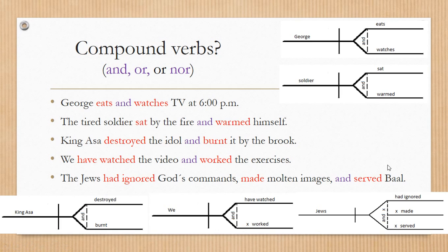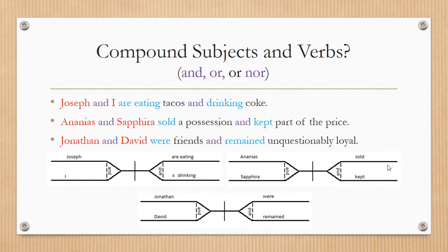Okay, now what if we have compound verbs and compound subjects? It's going to be like mixing compound subjects and verbs. So we are going to do this: identifying the subject and then identifying the verb.